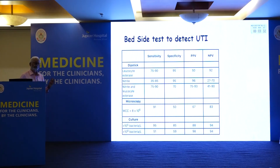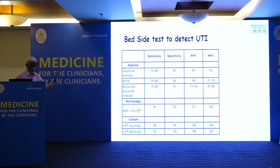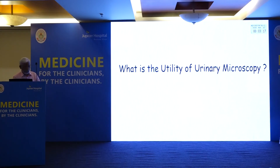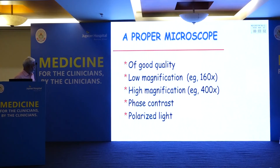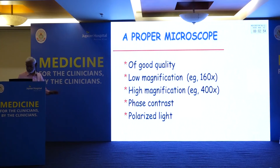Nitrite negative does not rule out urinary tract infection, because Pseudomonas and Enterococci do not convert nitrate to nitrite. Leukocyte esterase positive means more than 10 WBC per high-power field. Urinary microscopy looks for casts, crystals, parasites, bacteria, and cellular elements such as RBCs and WBCs. A good-quality microscope is needed — first examine on low magnification, then high magnification. Phase contrast microscopy, polarized microscopy, and bright-field illumination microscopy are all used.